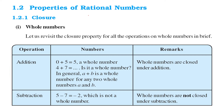Properties of rational numbers — closure property. This property says that when we add two numbers, if we add two whole numbers (whole numbers are natural numbers inclusive of zero), you'll get a whole number. If you subtract two whole numbers, you are going to get a number which is not a whole number. So when we talk about the closure property in terms of whole numbers, for addition it's okay.